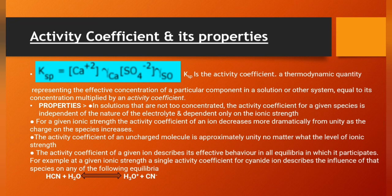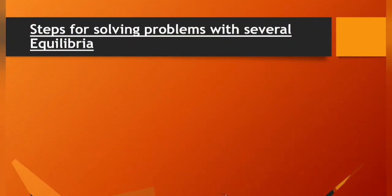For example, at a given ionic strength, a single activity coefficient for a cyanide ion describes the influence of that species on any of the following equilibria: HCN plus H2O equilibrium H3O+ plus CN-.